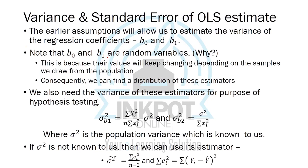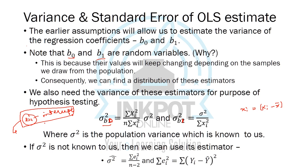Before we start with hypothesis testing, there's a small correction in this slide. We were estimating the model where b0 is the intercept term and b1 is the slope term. The variance of the slope term is sigma squared times x-bar squared upon n, divided by sigma of small xi squared. The notation was taken from Gujarati, who takes b1 as the intercept term, but in this lecture we take b0 as the intercept term.